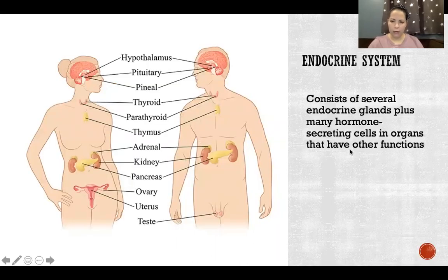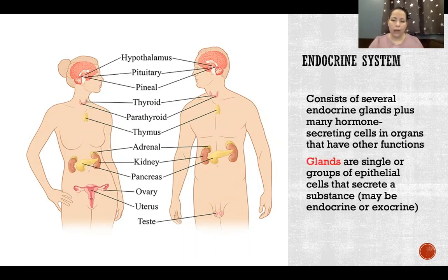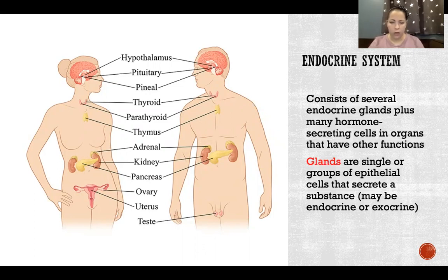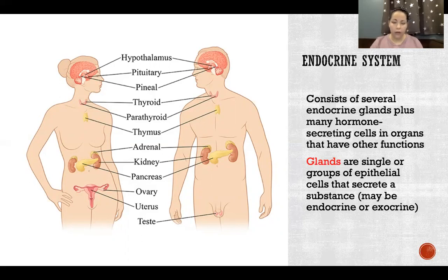The endocrine system consists of several endocrine glands, plus many hormone-secreting cells and organs that also have other functions. A gland is a single cell or groups of epithelial cells that secrete a substance. A gland could be endocrine or exocrine, and all glands throughout the body fall into those two categories — or in some cases, both.